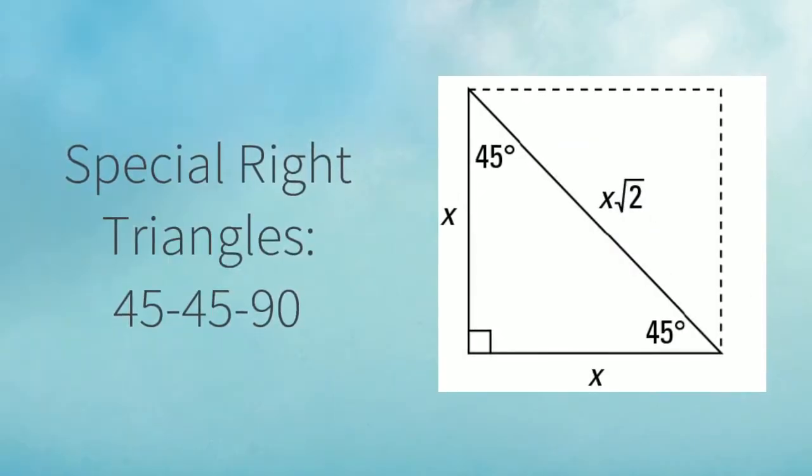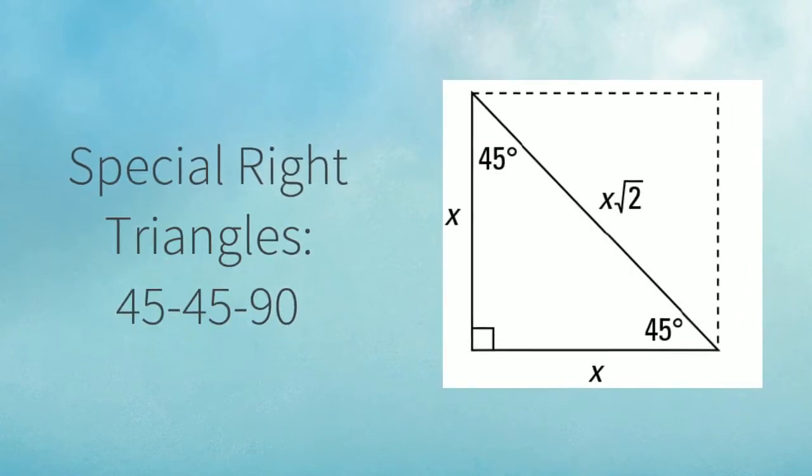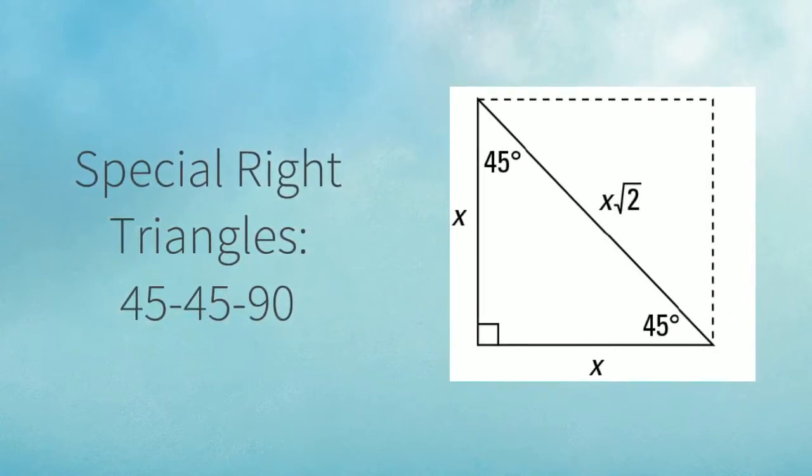The first part of our trigonometry review is learning about special right triangles. One of them is a 45-45-90 right triangle.